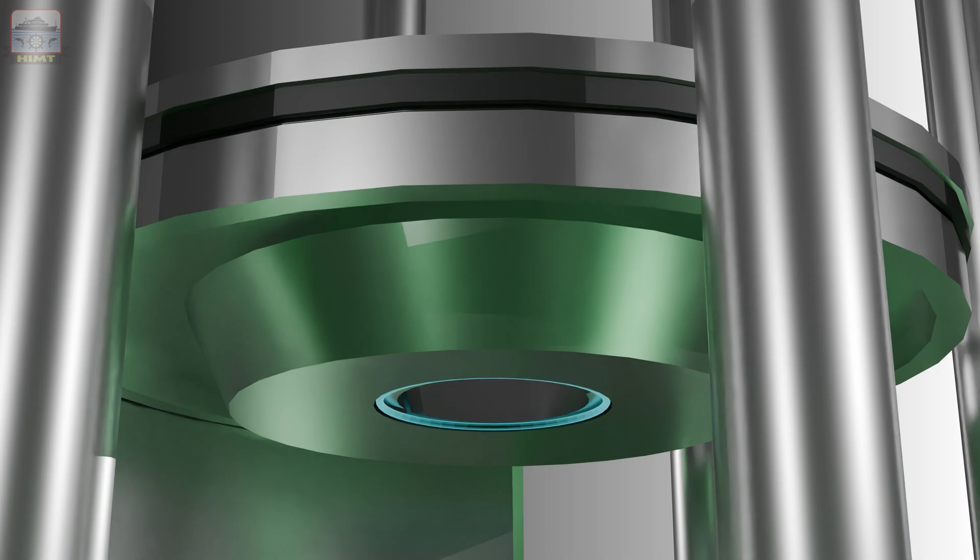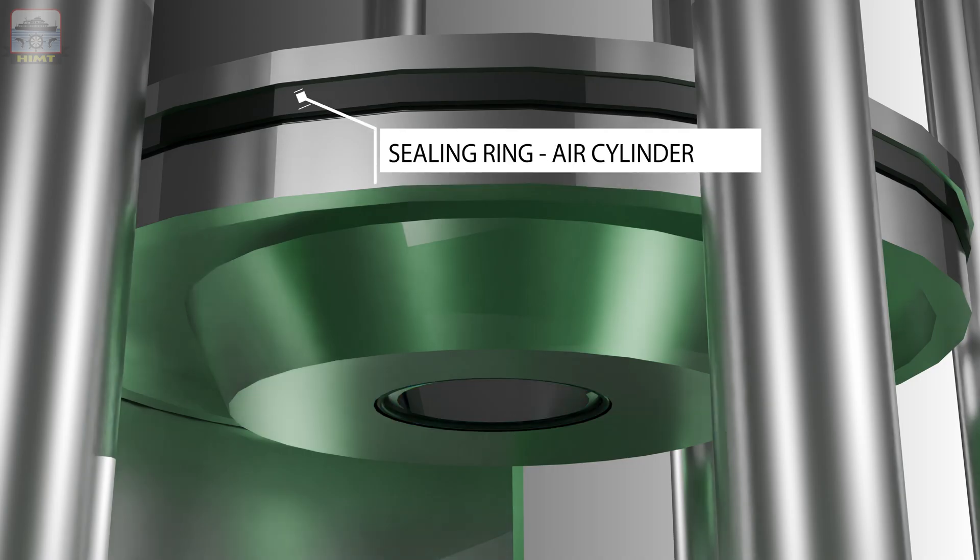The air piston is fitted with an O-ring which will be doing the sealing function with the spindle, and another sealing ring which is in contact with the air cylinder.